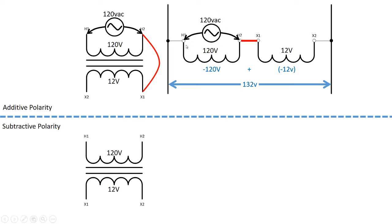You can see why we call this an additive connection because this coil of 120 volts plus the potential induced voltage of this coil gives us an additive voltage of 132 volts. And if we were to take a voltmeter and plug it in over here H1 to X2, that's what would indicate—that's what our meter would indicate is 132 volts AC. So that's our additive connection.